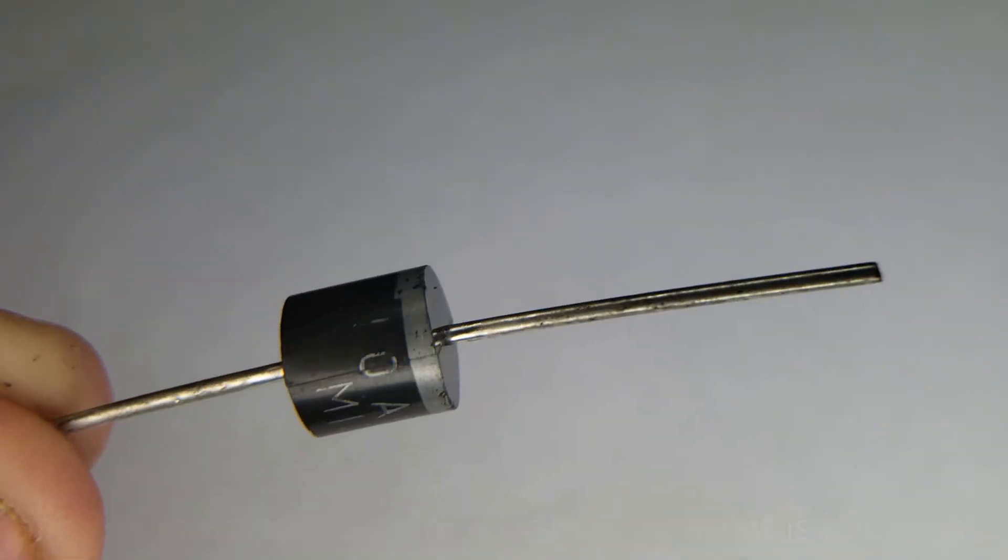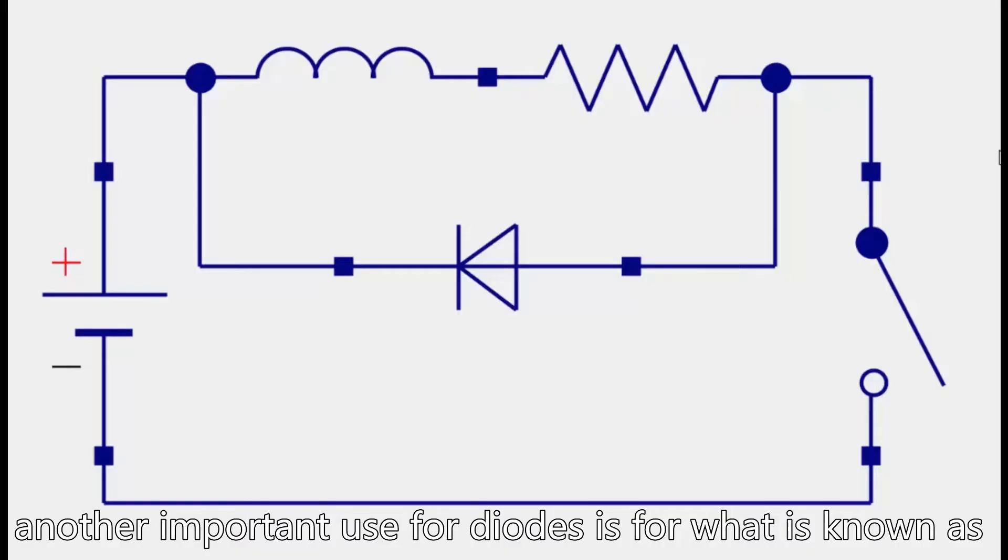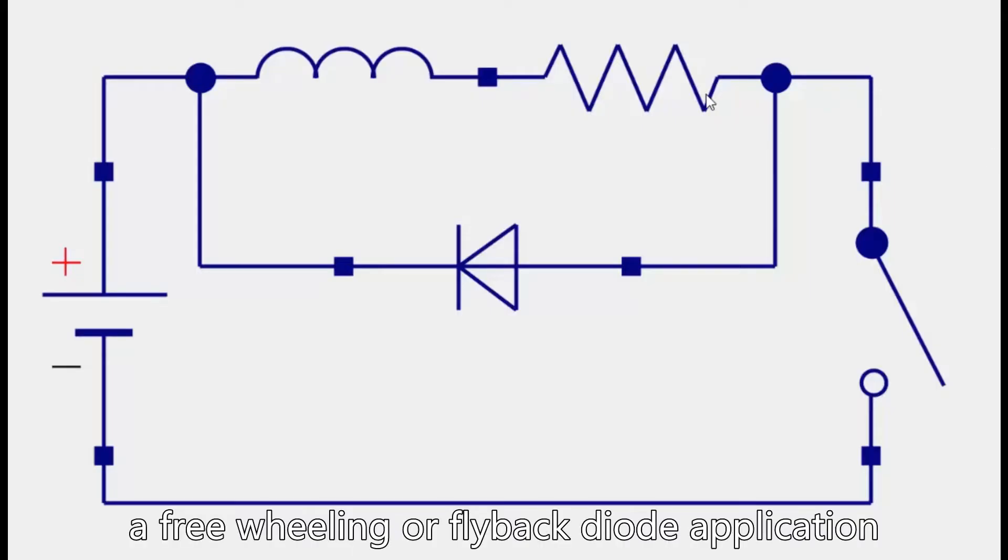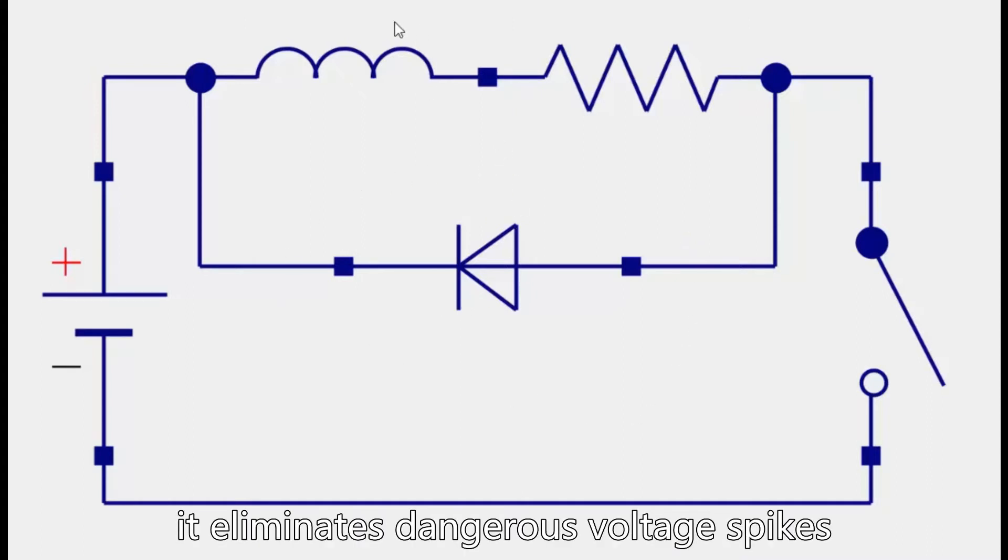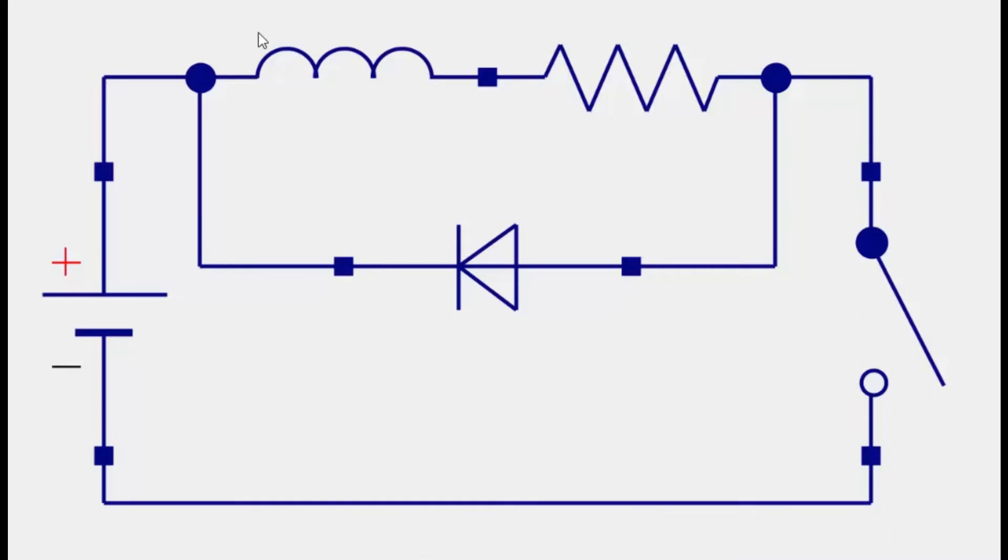Another important use for diodes is for what is known as a freewheeling or flyback diode application. When a diode is used as a flyback diode, it eliminates dangerous voltage spikes across inductive loads.